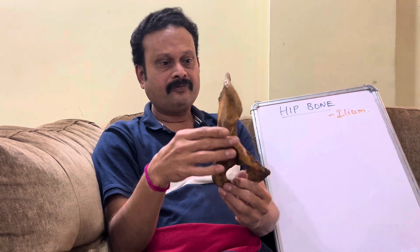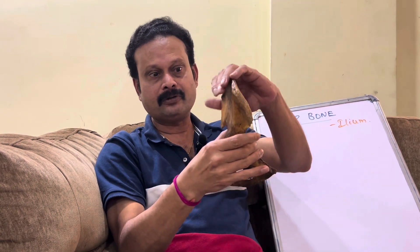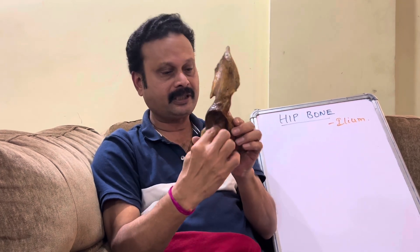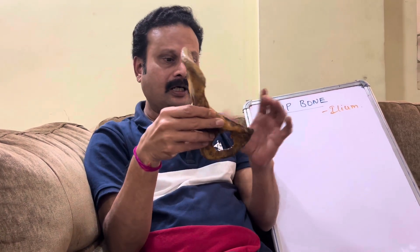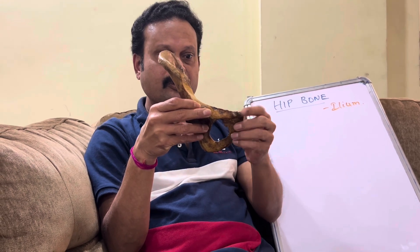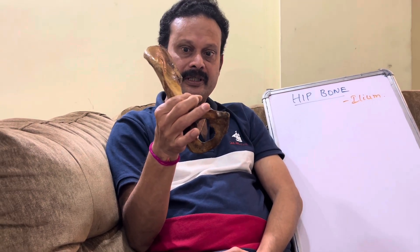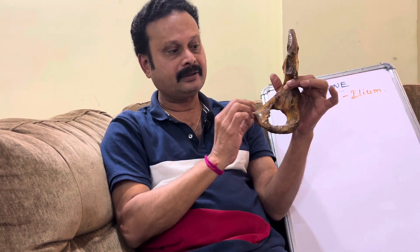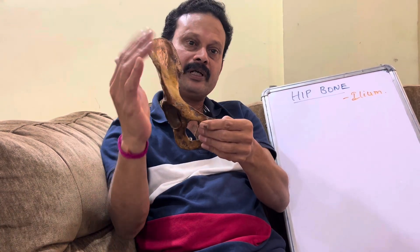For side determination, the expanded fan-shaped part called the ilium should be above. Second, the acetabulum — where the head of the femur lodges — should face laterally. The pubic symphysis or the pubis bone should lie in front. If held wrong, the pubis faces backwards, which is incorrect. So the pubis should lie in front, acetabulum face laterally, and ilium lie above.